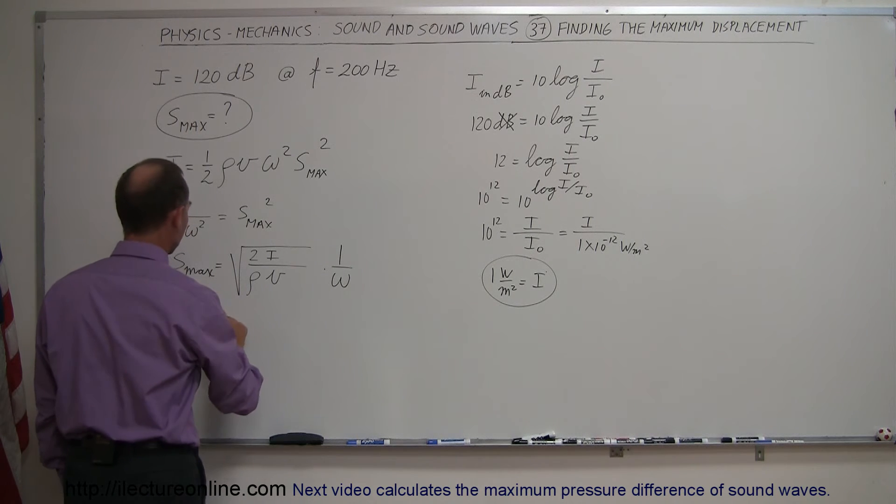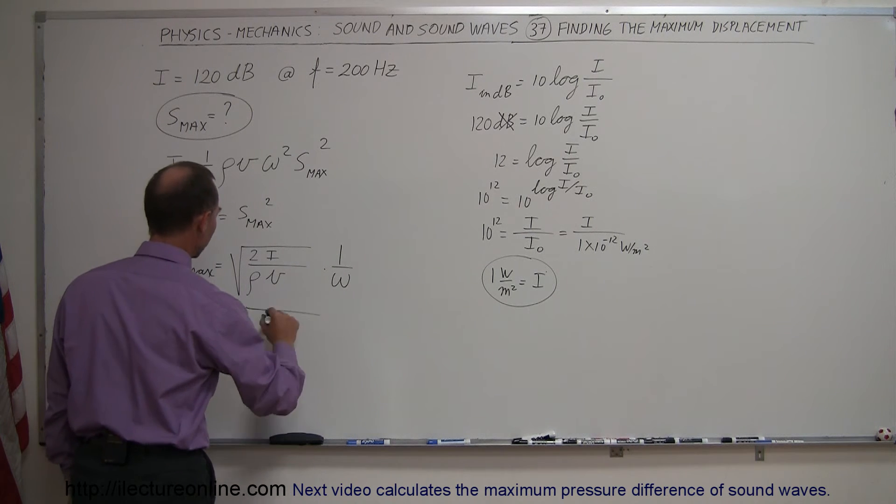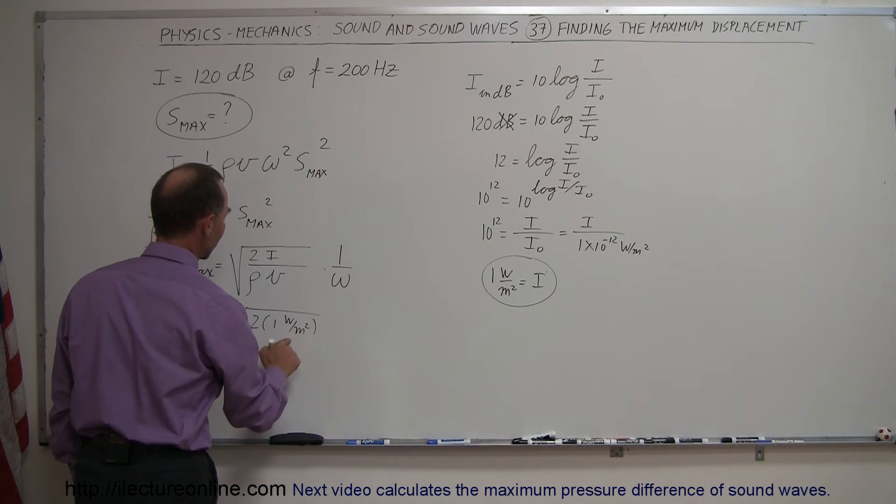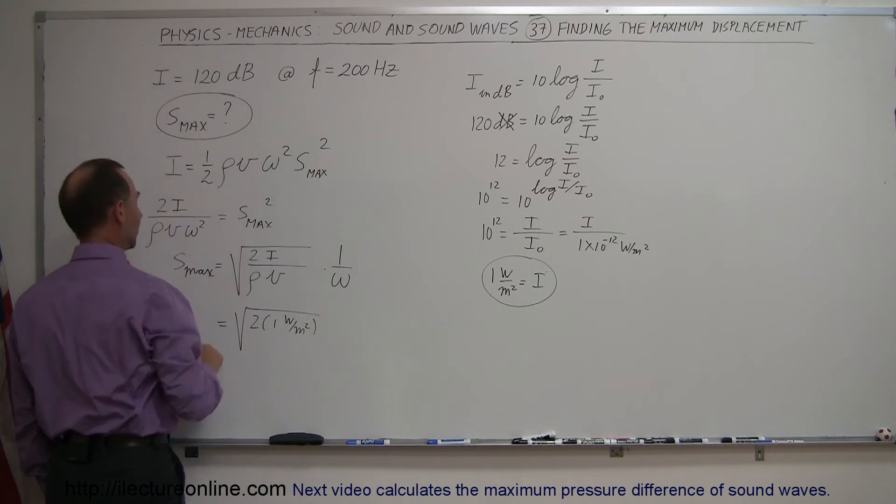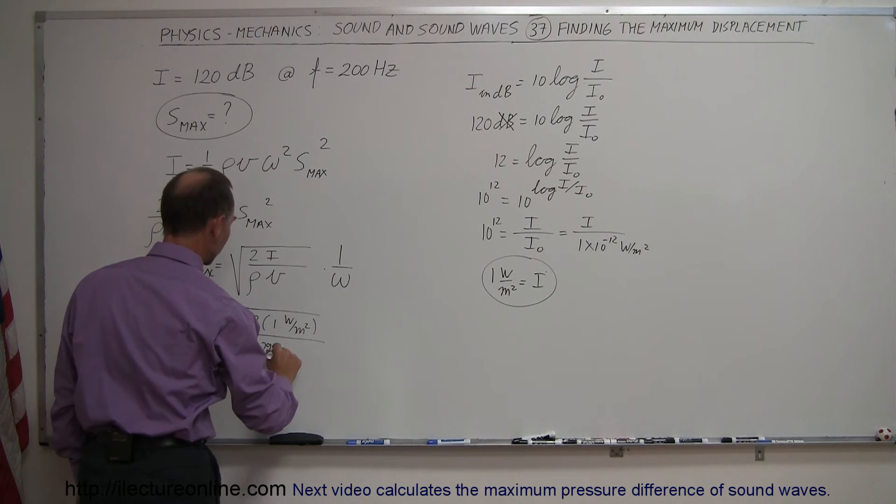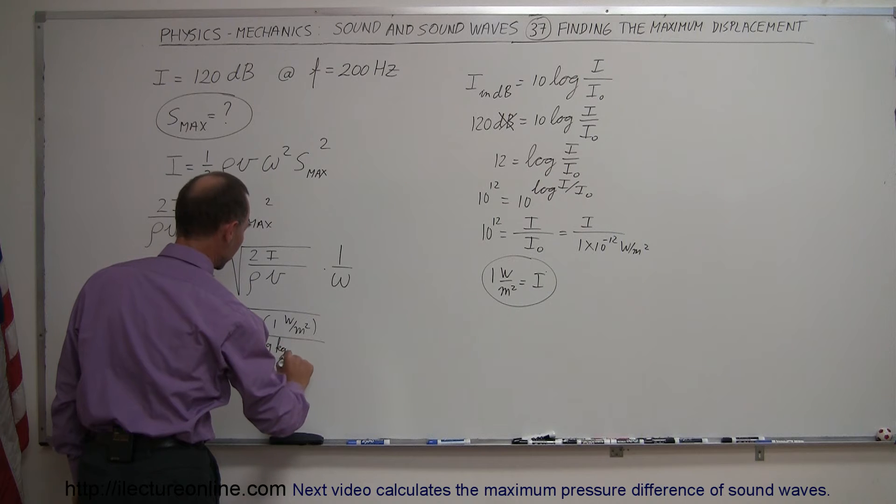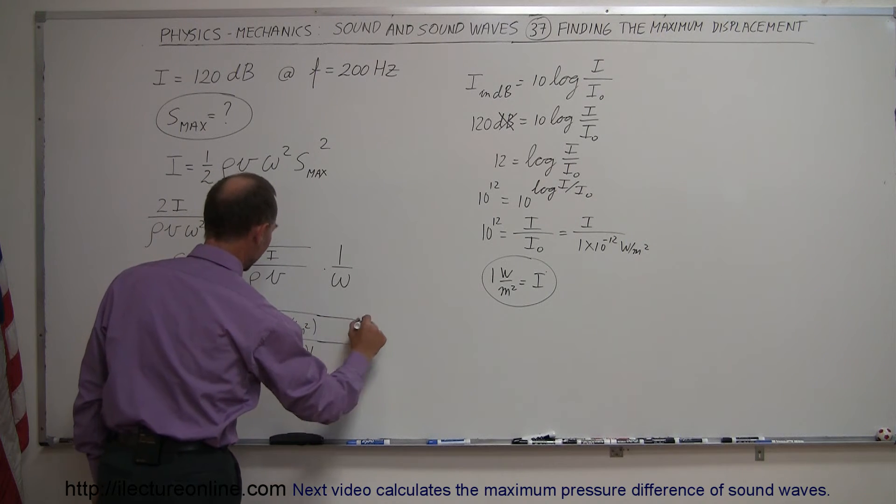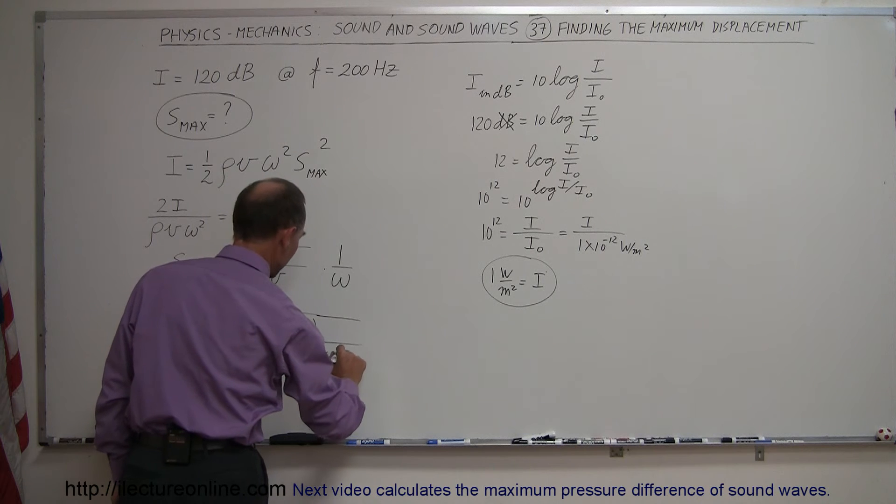So knowing that, this is equal to the square root of 2 times 1 watt per square meter, that's equivalent to a sound intensity of 120 decibels, divided by the density of air which is 1.29 kilograms per cubic meter, and divide that by the velocity of sound in air which is about 340 meters per second.